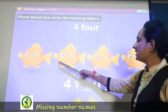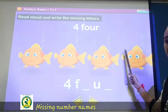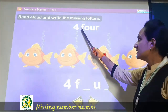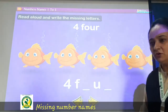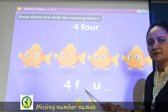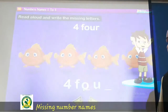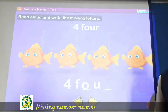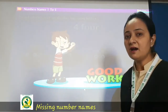Now see how many fish are there — 1, 2, 3, and 4 fish are there. So the spelling is F, O, U, R — FOUR. So F is given, what will be right here? O — so write that O. Then U is given, what will be right here? R — so write that R.